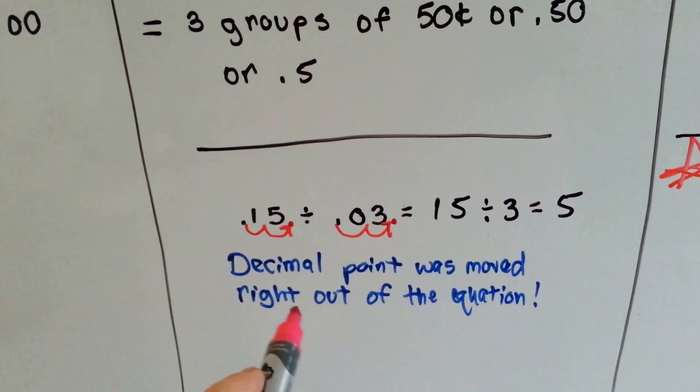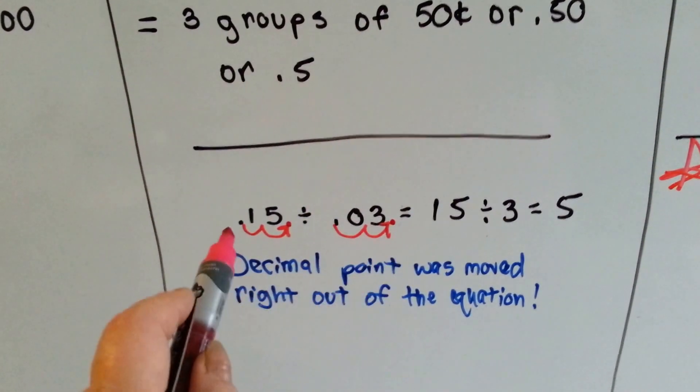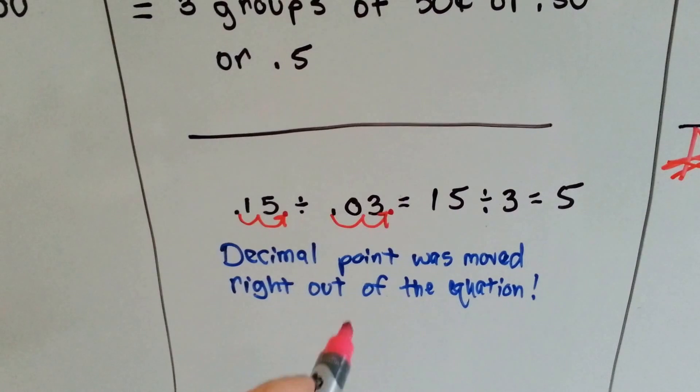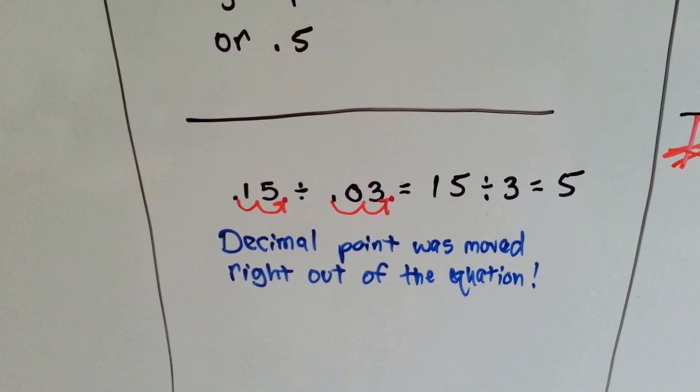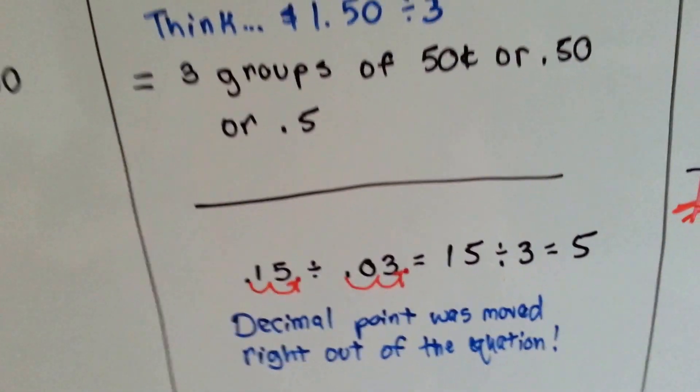But to make our life easier, we could just move the decimal point in the divisor, and move it the same amount of times in the dividend, and move the decimal point right out of the equation. And we end up with 15 divided by 3 equals 5. That was easy.